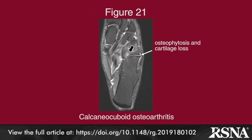The final section of the paper addresses Chopart joint osteoarthritis, often as a long-term sequela of prior midtarsal sprain or Chopart joint fracture. This is most frequently observed radiographically and on MR as joint space narrowing due to cartilage loss and osteophytosis along the dorsal talonavicular and lateral calcaneocuboid joints. Figure 21 shows an example on MR.